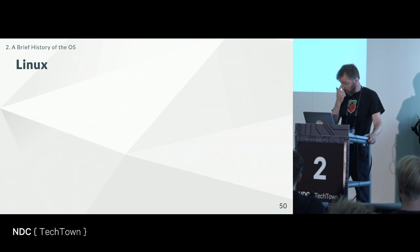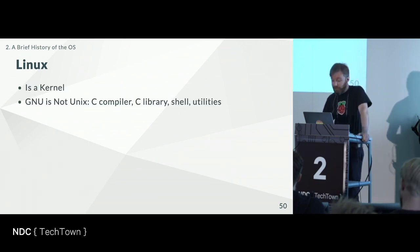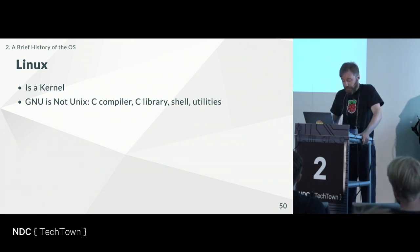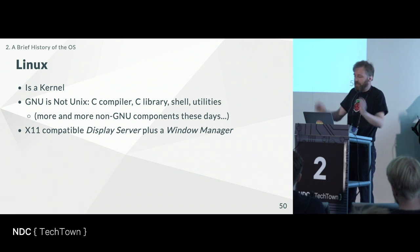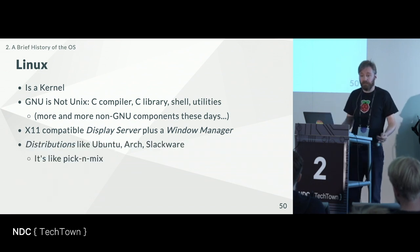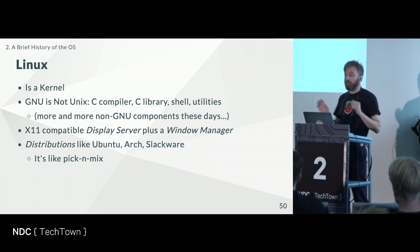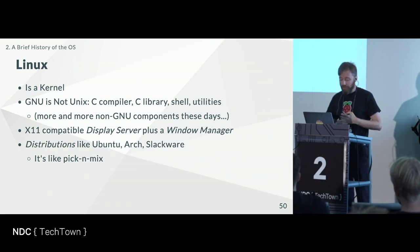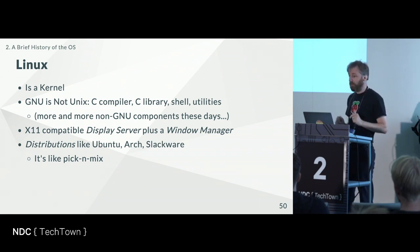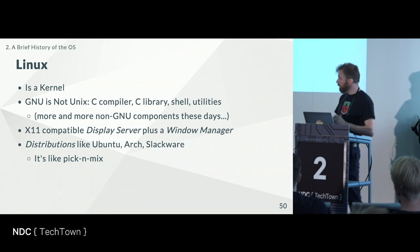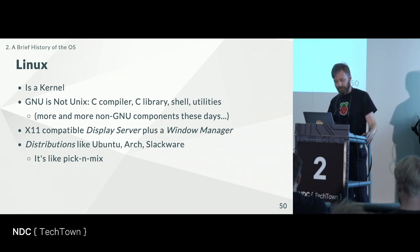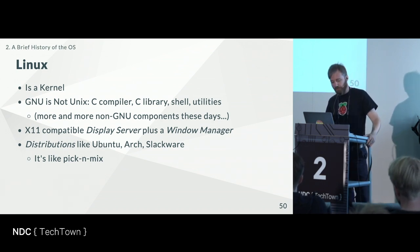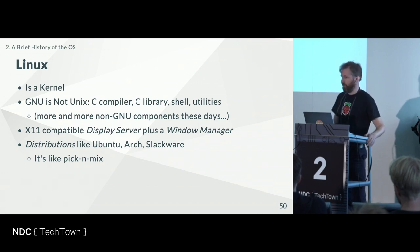Linux — it's a kernel, not an operating system. The tools were supplied by the Free Software Foundation's GNU project — GNU is Not Unix — which provided the compiler, libraries, and shells. I like to think of a Linux distribution as a pick-and-mix: I'll have the kernel, Wayland, PipeWire for audio, this browser. Someone has to curate that collection and bring it all together. Key takeaway: Linux is not an operating system. Ubuntu is an operating system because someone has picked all the bits.